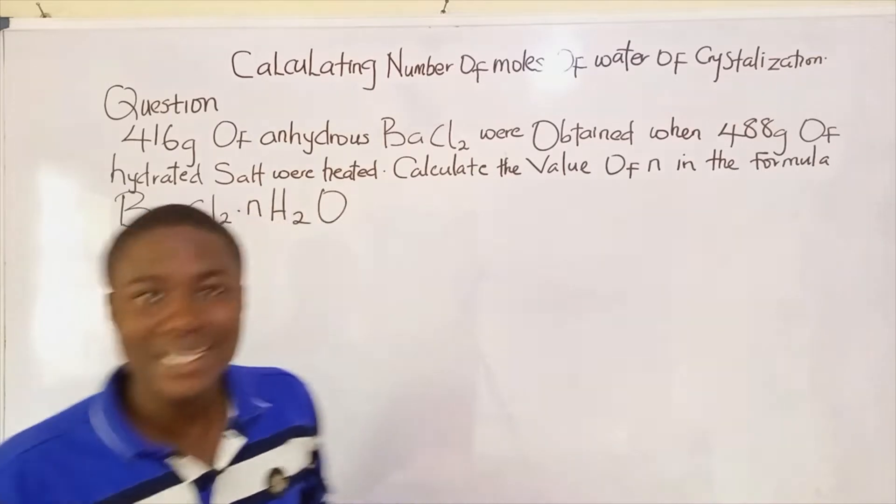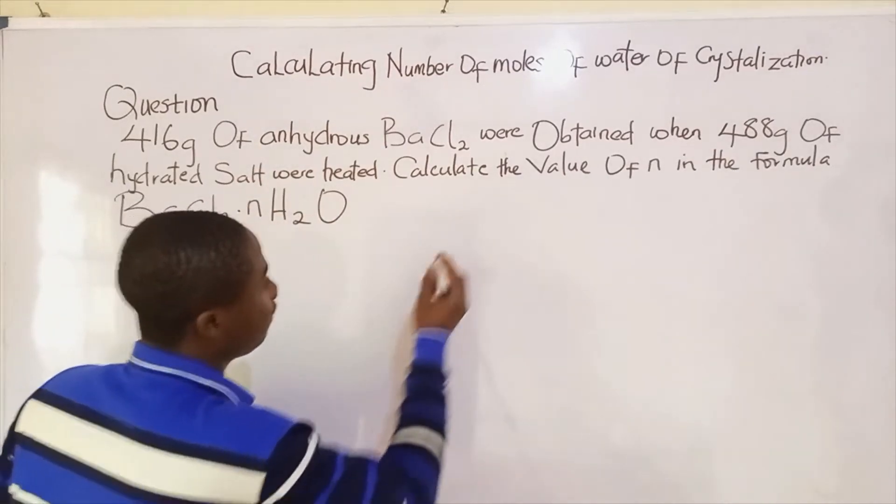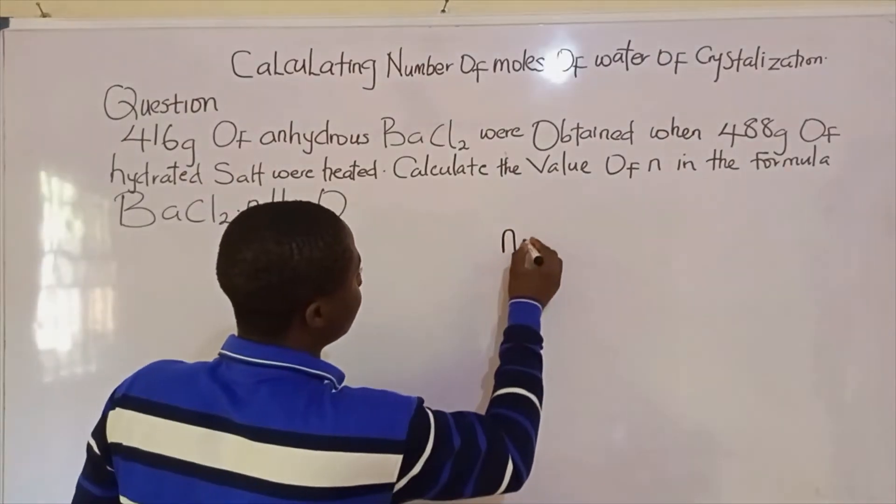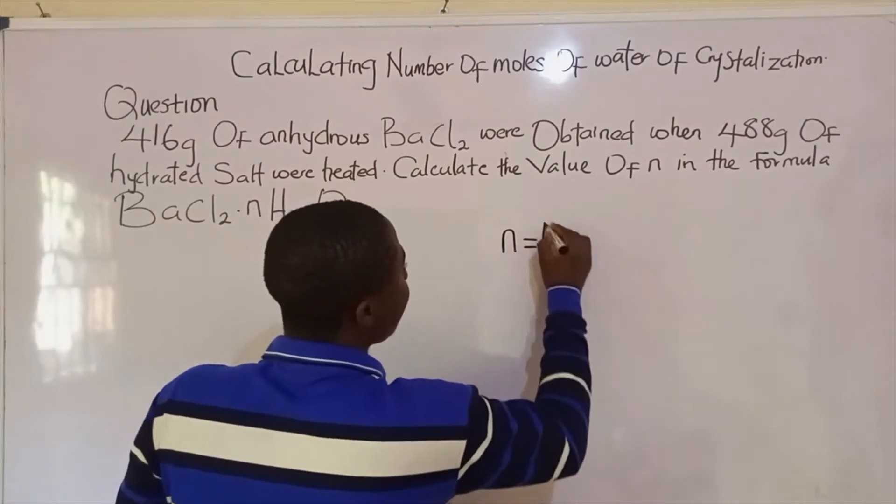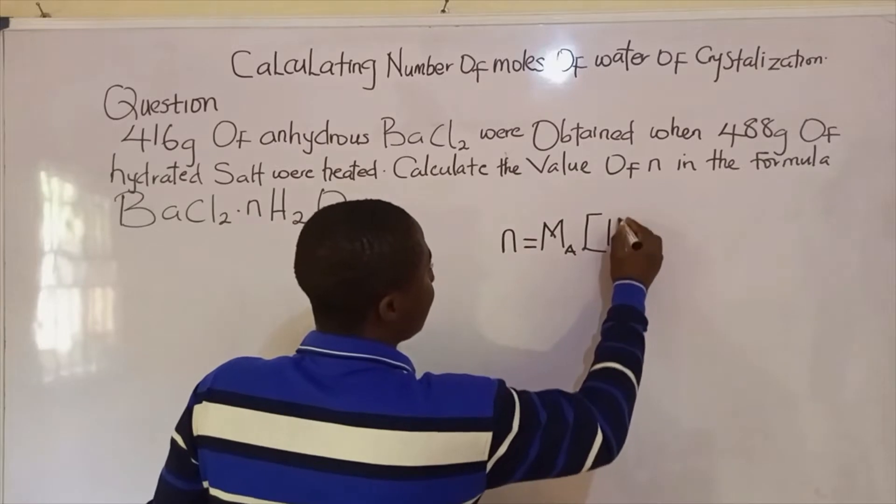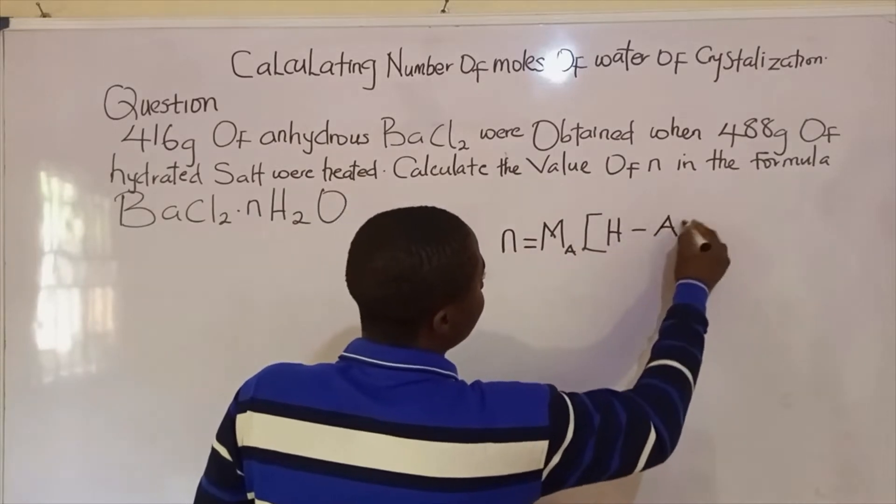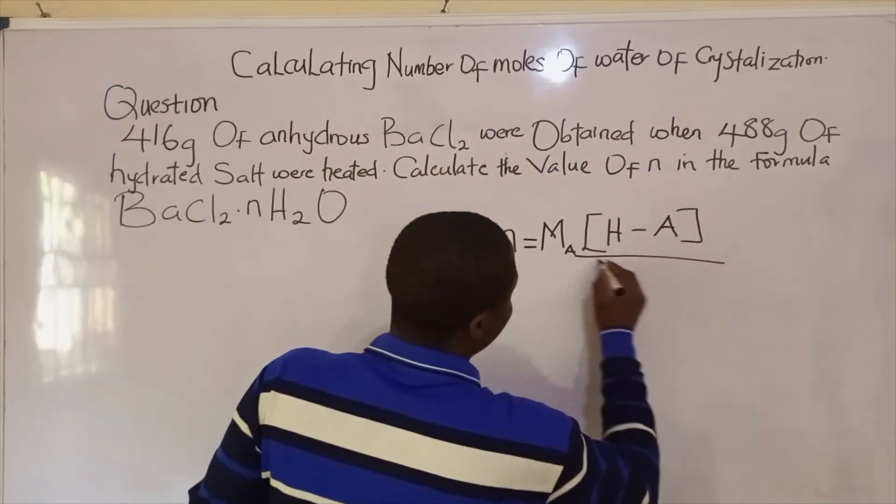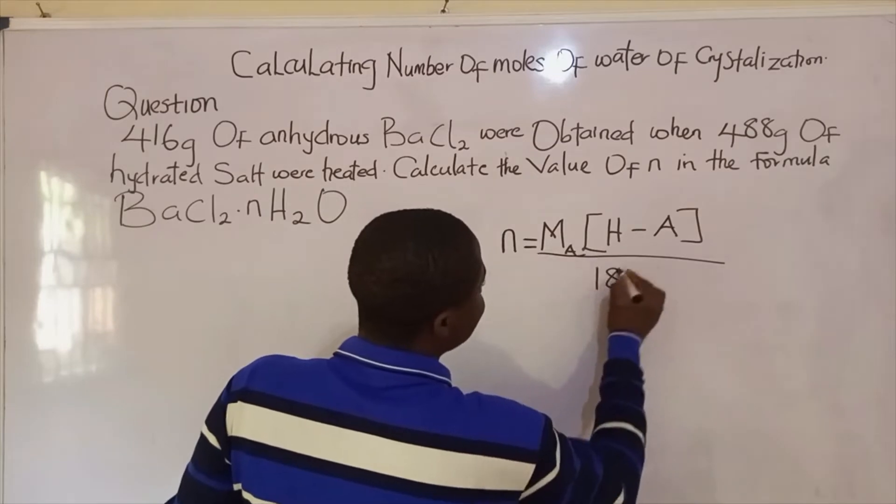Now, there's an easy formula to be used and it's simply N equals MA into brackets H minus A over 18A.